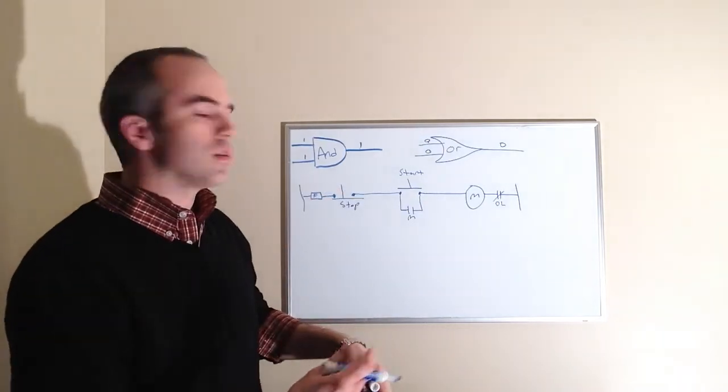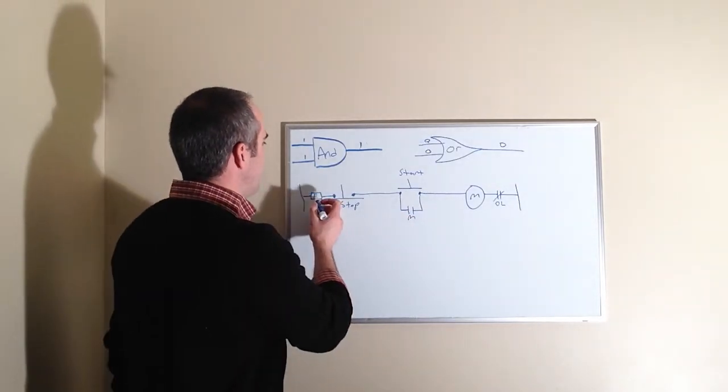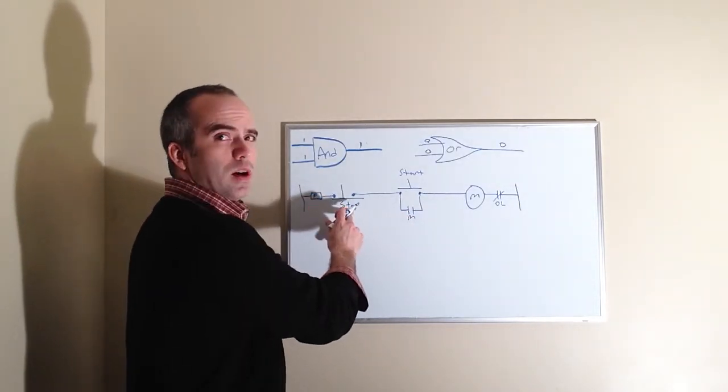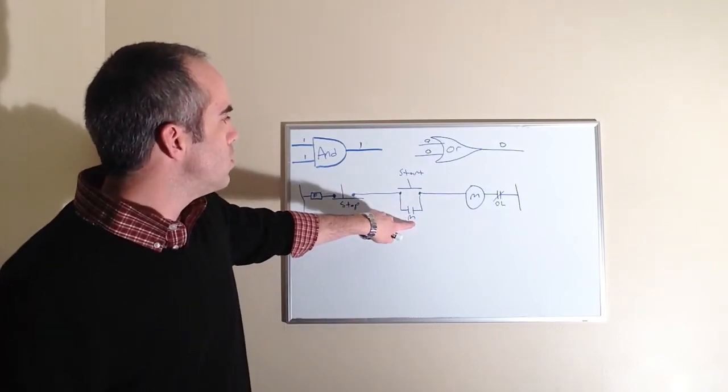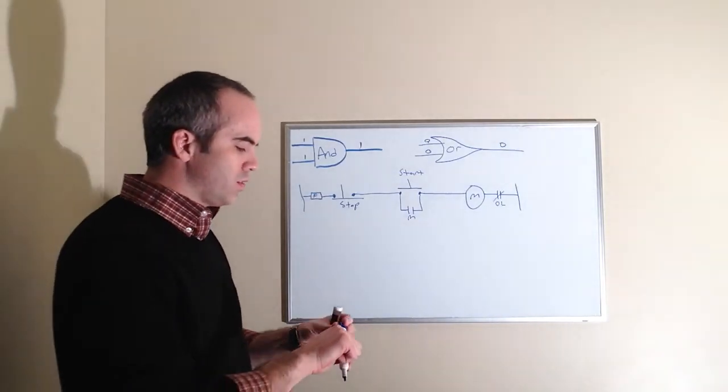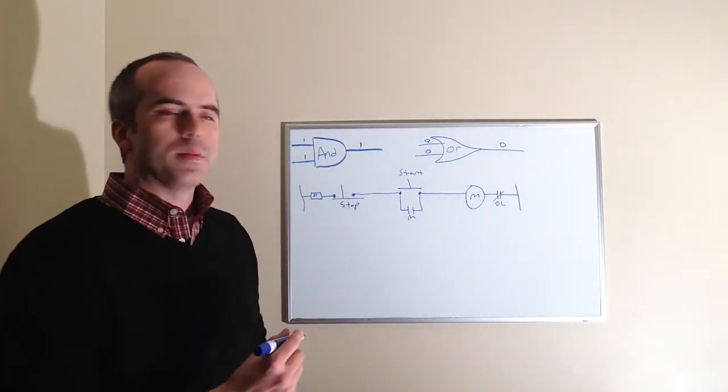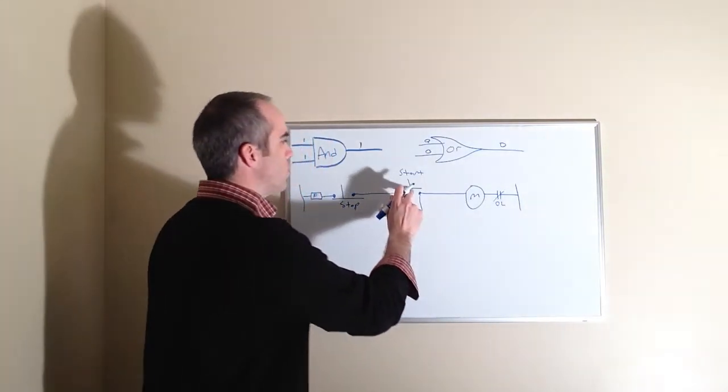If we look at our start-stop circuit, we have a series circuit, but we have this parallel loop right here. So we have a fuse and a stop button and a start button or the M-coil and the overloads. So let's draw this in a logic diagram and let's see what it looks like.